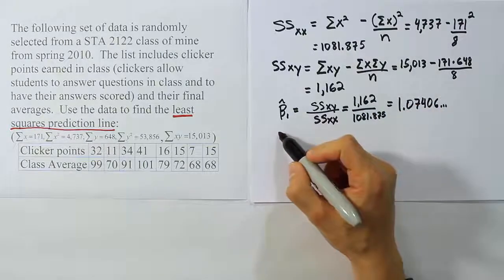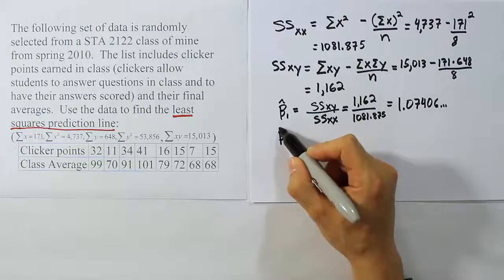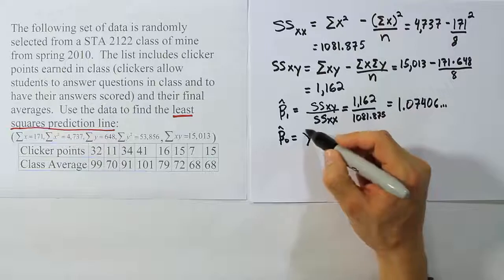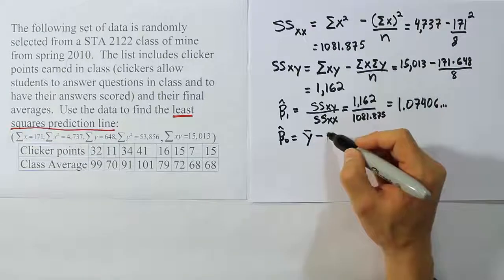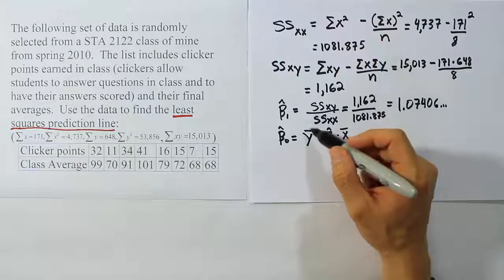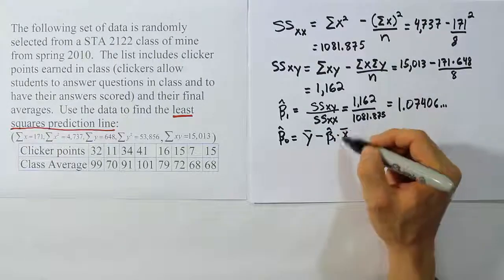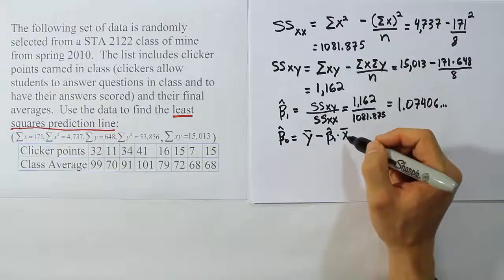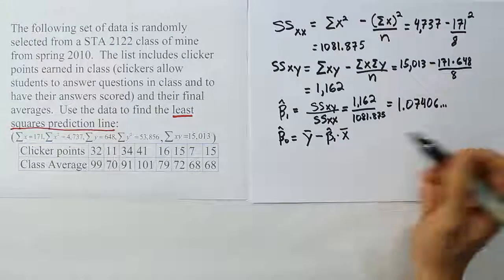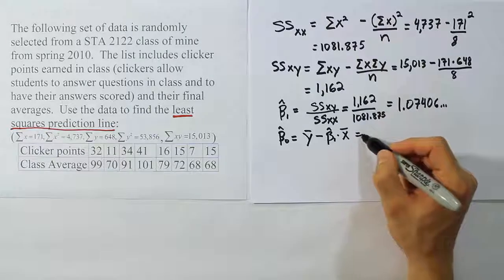The next part is the Y intercept. We're going to have to do beta 0 hat. This has a very simple formula. It's Y bar minus beta 1 hat times X bar, where Y bar is the sample mean for Y and X bar is the sample mean for X. We have to determine those quantities separately. Let's work them out quickly right here on the page where we're going to do the formula.